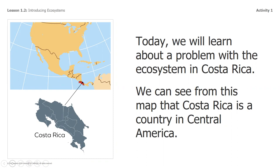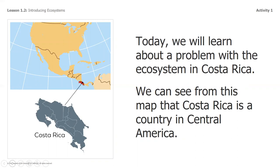We're focusing in on Costa Rica. You can see from this map that Costa Rica is a country in Central America. This is a photograph of an ecosystem there. What kind of ecosystem do you think this might be? You said rainforest — you are correct! As ecologists, we're going to be looking at living things, or organisms. What kind of organisms do you think might live here? We'll be discussing that in our Zoom chat tomorrow.